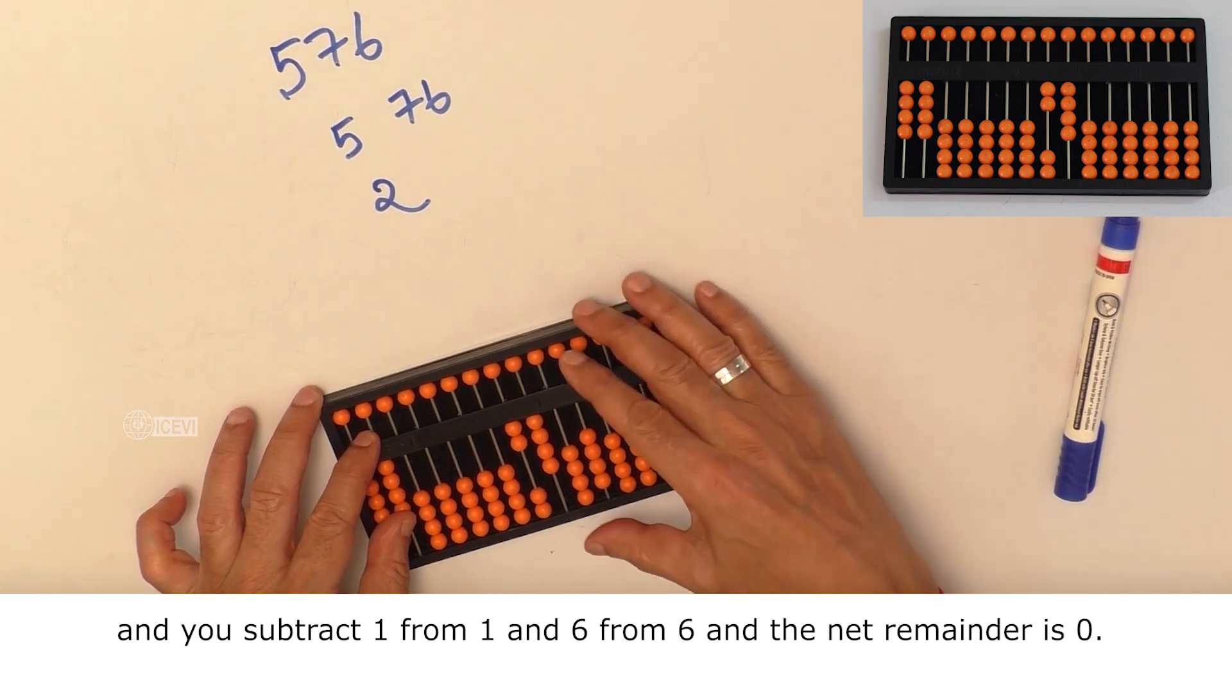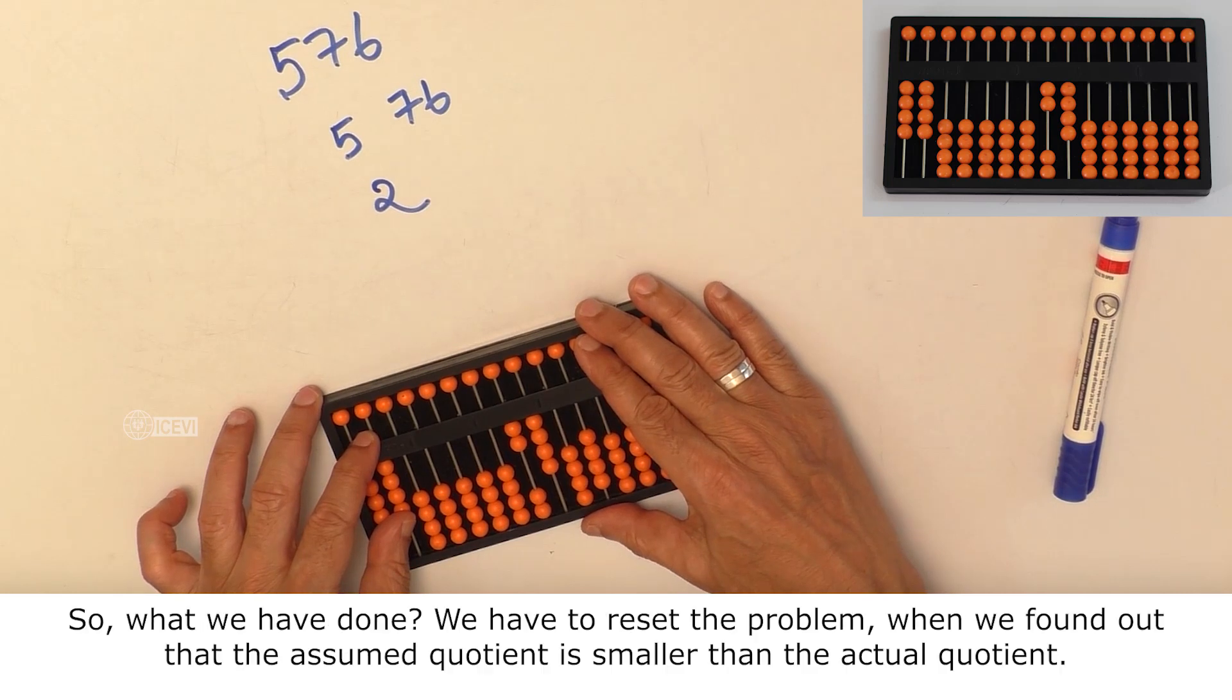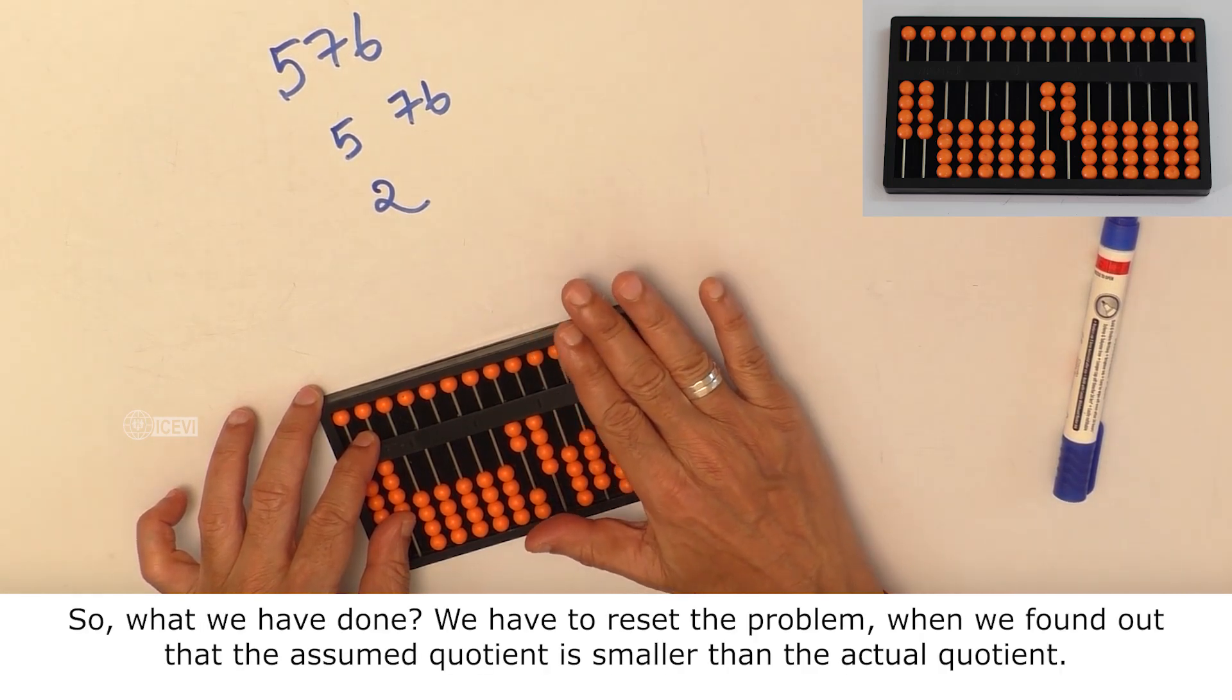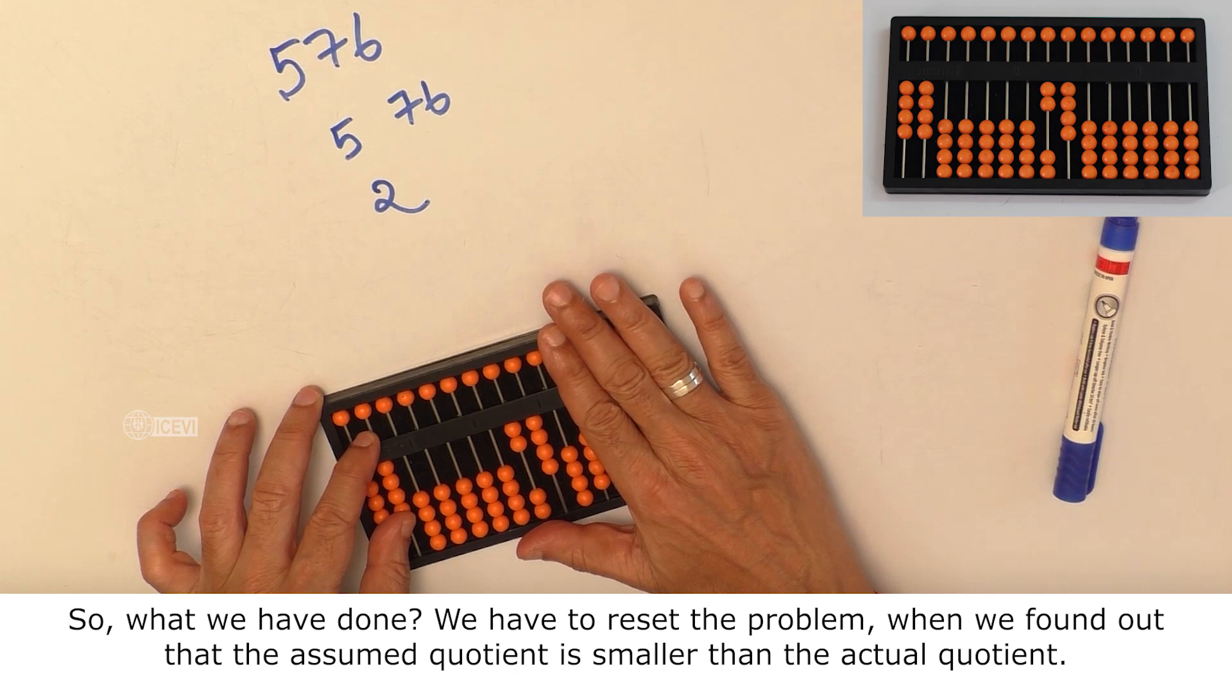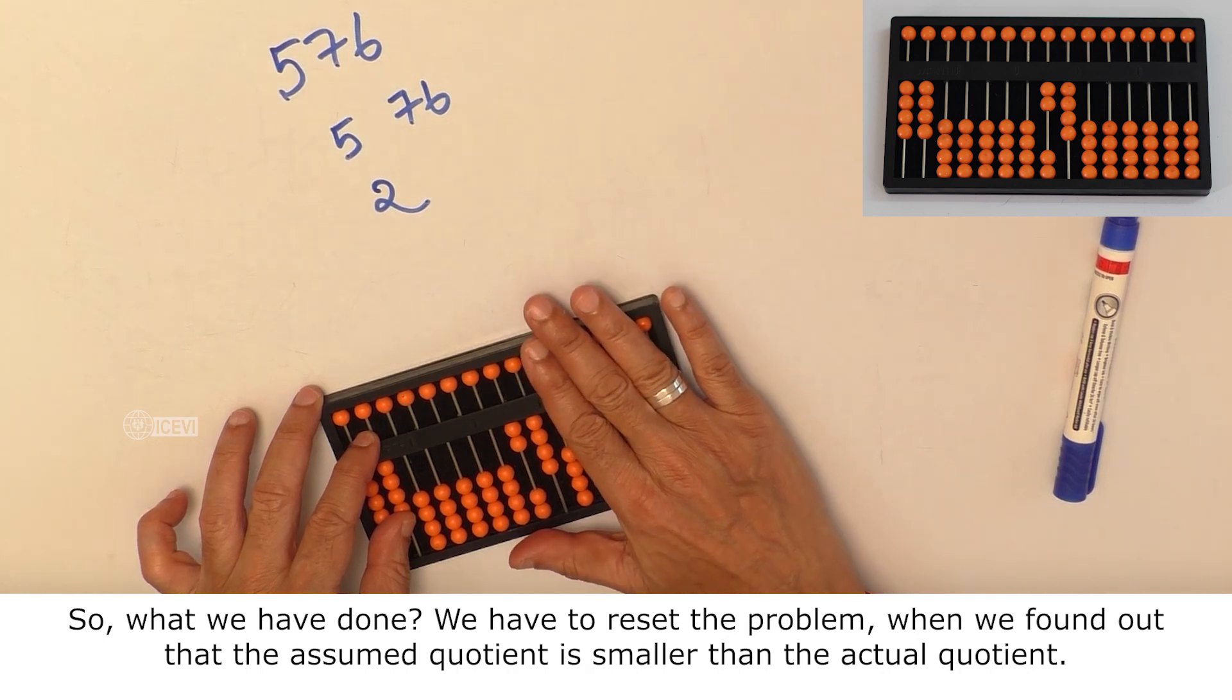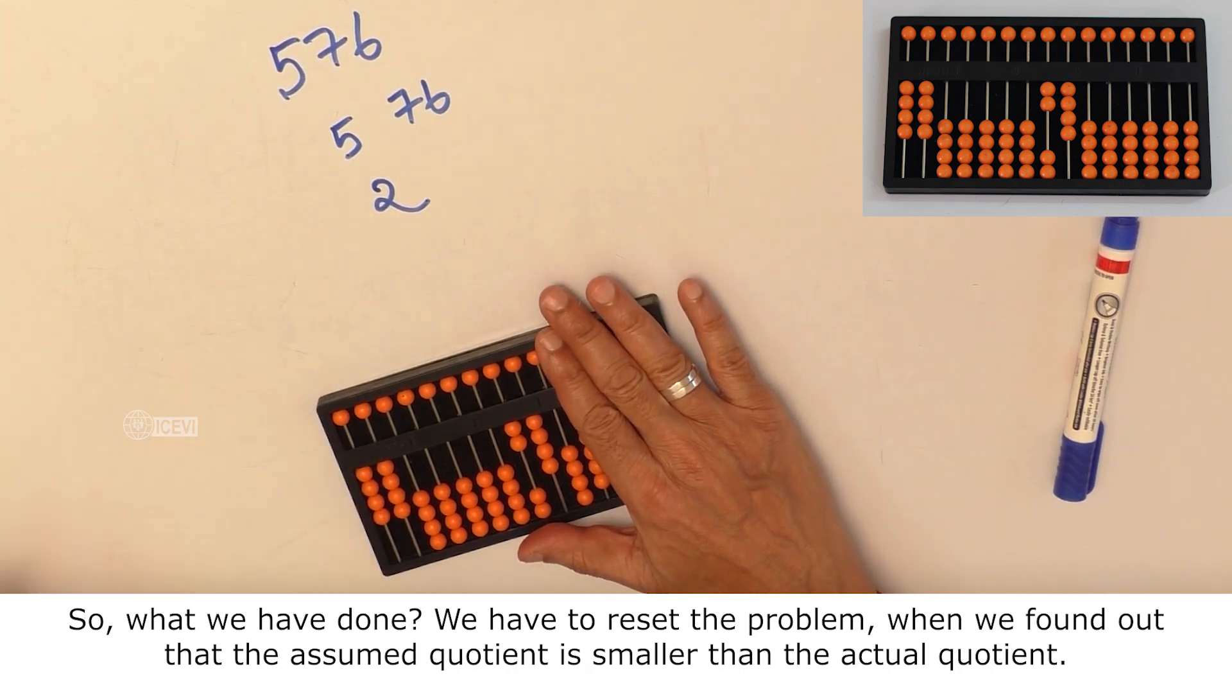And the net remainder is 0. So, what we have done? We had to reset the problem when we found out that the assumed quotient is smaller than the actual quotient.